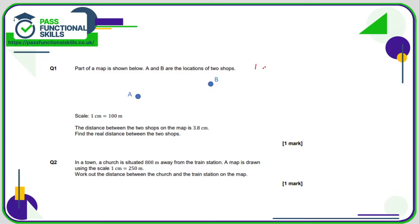We know the scale is 1 centimeter equals 100 meters. So if the distance between A and B is 3.8 centimeters, what does that mean in terms of meters in real life? Well, if 1 is 100, then 3.8 is going to be 3.8 multiplied by 100.